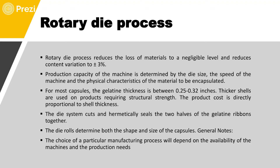Please memorize these figures as they are very important. Thicker shells are used for products requiring structural strength. The product cost is directly proportional to shell thickness — as shell thickness increases, physical strength increases and cost also increases proportionally. The die system cuts and hermetically seals the two halves of the gelatin ribbons together by heating them. The die rolls determine both the shape and size of the capsules.